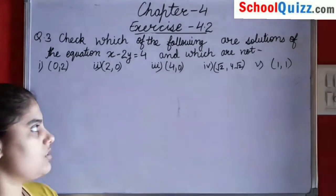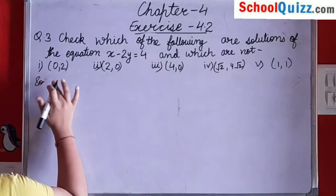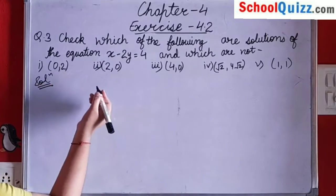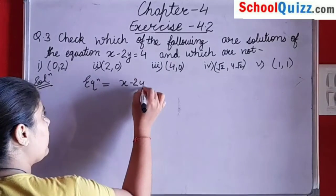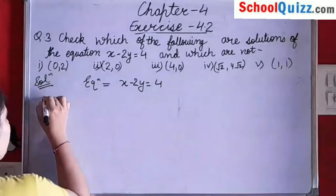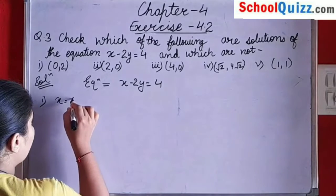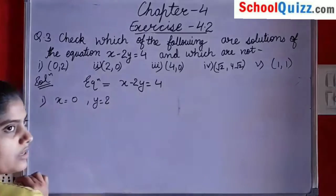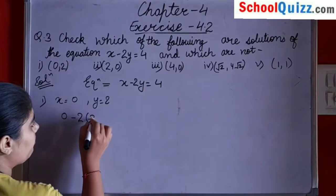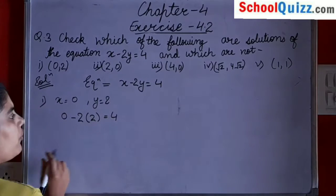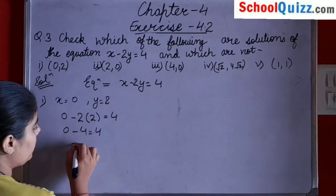Our equation is x minus 2y equals to 4. Taking the first point (0, 2), that means x equals to 0 and y equals to 2. Putting x as 0 and y as 2, we get 0 minus 2 times 2, which should equal 4. So 0 minus 4 gives us minus 4.